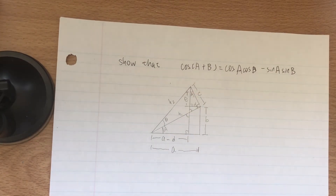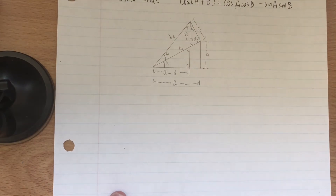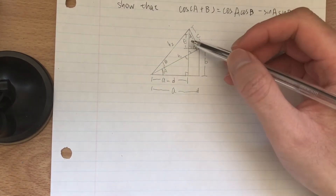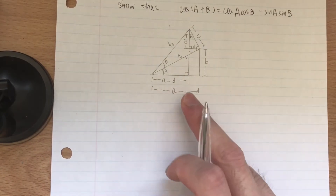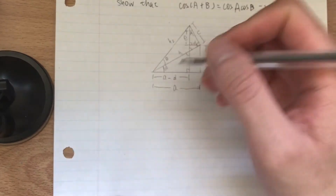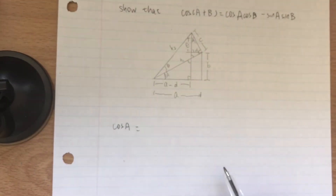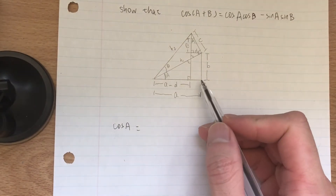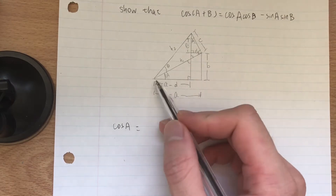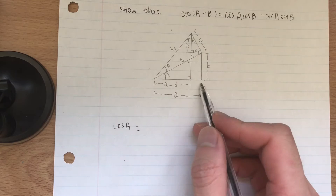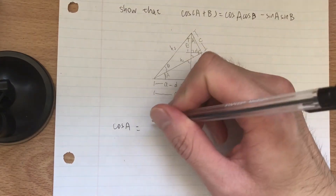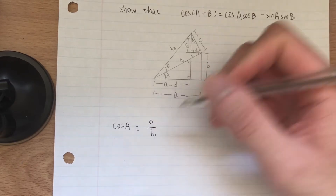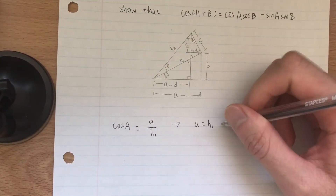Now we have enough information to start writing equations. Let's start with cosine A. Cosine A corresponds to this right triangle, so it equals this whole length 'a' over hypotenuse h1. We can write this as: a equals H1 cosine A.